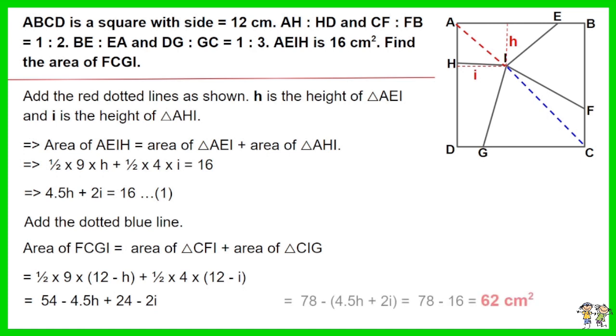Solve the equation and replace the value of 4.5H plus 2I from equation 1. The answer is 62 cm square.